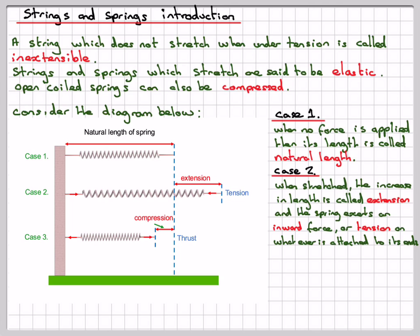Now, if you've got a coil spring, you can also push it inwards, and this is called a compression. The natural length will be reduced. The force here, the thrust, is actually outwards, pointed in the opposite direction to case two. The arrows are pointing outwards.